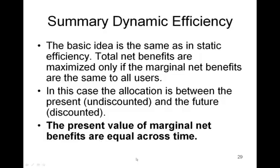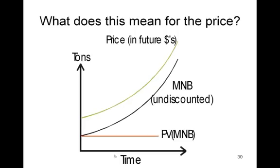The basic idea of dynamic efficiency: total net benefits are maximized only if the marginal net benefits are the same to all users — present, future, etc. The present value of the marginal net benefits should be equal across time. One interesting implication is that prices will tend to increase over time. The undiscounted marginal net benefit has to be increasing — that's the only way we can have the present value of the marginal net benefit decreasing.